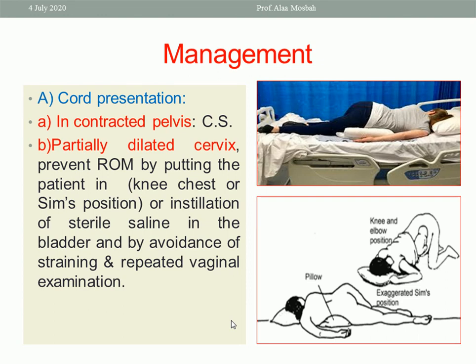In case of cord presentation with contracted pelvis and a mature fetus, do elective caesarean section. If the cervix is partially dilated, try to prevent rupture of membranes by putting the patient in the knee-chest position, Sims' position, or exaggerated left lateral position, to avoid pressure of the presenting part on the umbilical cord. You can also insert 500cc saline solution inside the bladder to avoid cord compression.